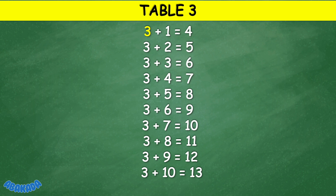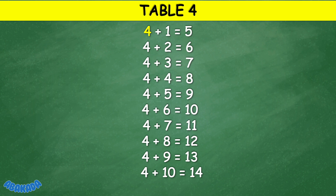Table 3: 3 plus 1 equals 4, 3 plus 2 equals 5, 3 plus 3 equals 6, 3 plus 4 equals 7, 3 plus 5 equals 8, 3 plus 6 equals 9, 3 plus 7 equals 10, 3 plus 8 equals 11, 3 plus 9 equals 12, 3 plus 10 equals 13.